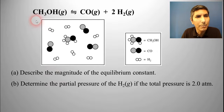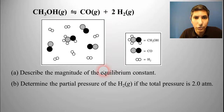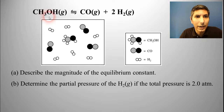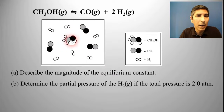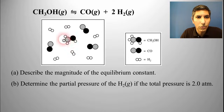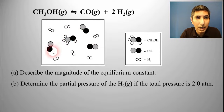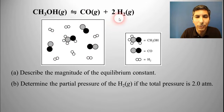In this type of example, which is a very typical type of problem, we have a balanced equation and we're given a picture. There's a legend off to the side. We can see that CH₃OH gas is decomposing into carbon monoxide gas and two moles of hydrogen gas. Examining this picture, we see that of the ten molecules pictured, only one is CH₃OH — only one reactant molecule remains — whereas we have three carbon monoxide molecules and six hydrogen molecules, both products.